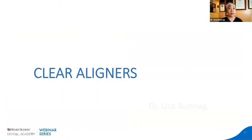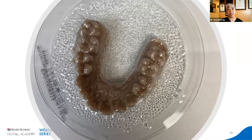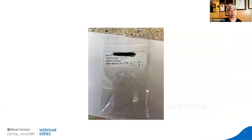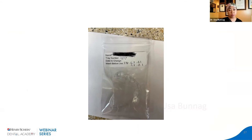I started 3D printing because I wanted to do my own clear aligners — I was tired of spending $1,800 for a full case. We print a series of models and then make our own aligners. I'll walk you through the process we follow, including the different sets of trays.